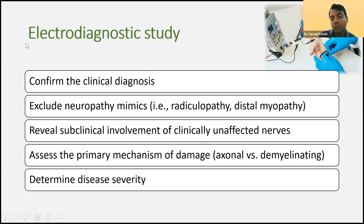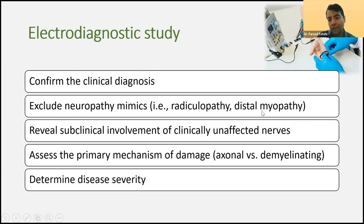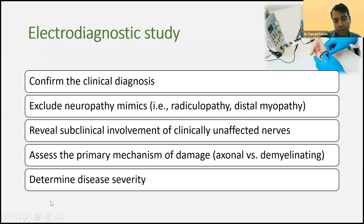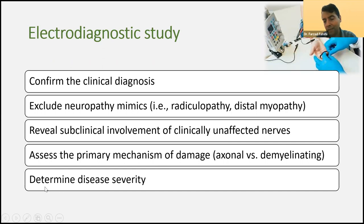Electrodiagnostic study also excludes other neuropathy mimics such as radiculopathy or distal myopathy. It can reveal subclinical involvement of clinically unaffected nerves — for example, a patient complaining of distal paresthesia in legs may show upper limb involvement on EDX as well. It defines the accurate mechanism of damage — axonal versus demyelinating. In diabetic polyneuropathy, axonal type is expected; demyelinating neuropathy is usually seen in other syndromes such as Guillain-Barré or CIDP. EDX also helps determine disease severity and intensity.